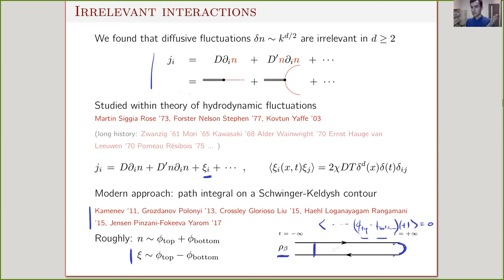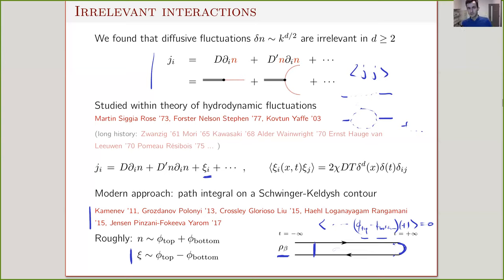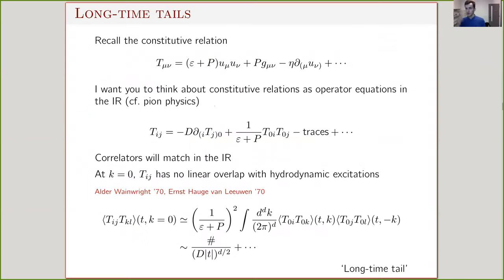If we want, say, the two-point function of a current, we use these expansions and compute what they give: a tree-level contribution from the first term, a one-loop correction from the second term, and so on. We can Wick-contract our densities to leading order because the effective field theory is approximately Gaussian. Let me show an example of an interaction effect in the case of conserved momentum — this effect goes under the name of hydrodynamic long-time tails.